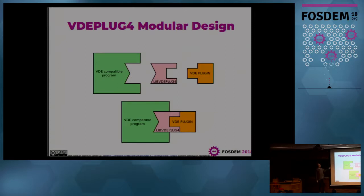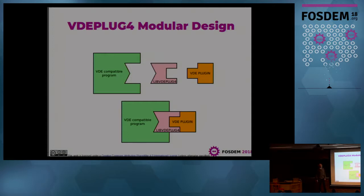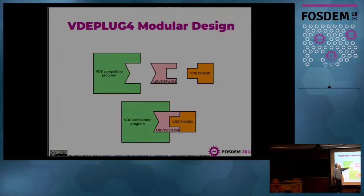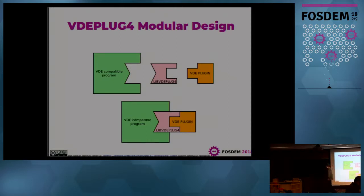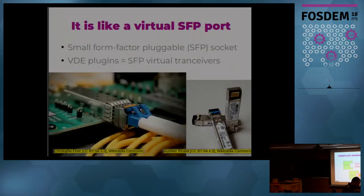I've depicted all the entities as jigsaw puzzle tiles, where each kind of boundary is a different API or protocol. The new idea is libvdeplug4, which is a library that is backwards compatible with all the tools and virtual machines already supporting VD, but at the same time libvdeplug4 has plugins, so you can use VD to create virtual networks using very different technologies.